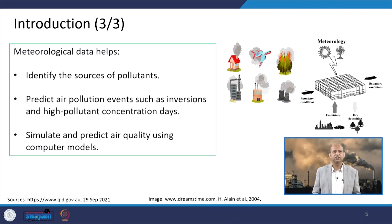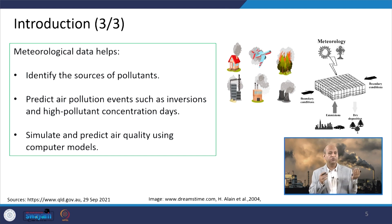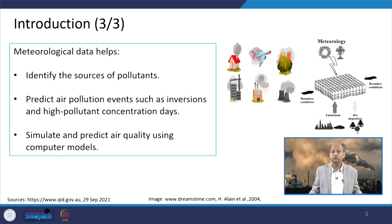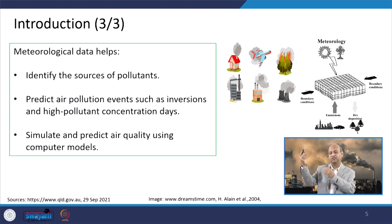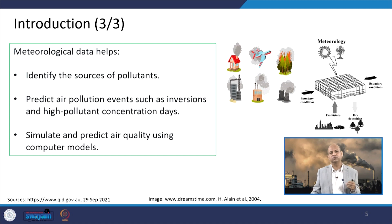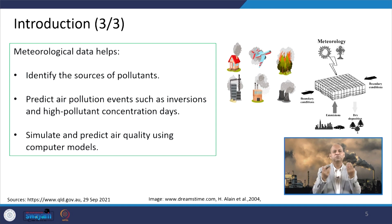Meteorological data helps in identifying the sources of pollutants because inverse modeling can also be done. For example, at a particular monitoring point if you get very high pollutant concentration and there are no obvious local sources, then using meteorological parameters — the wind direction, the upwind direction — you can do inverse modeling and trajectory plotting to trace back to the particular source in the upwind direction from which that pollutant is coming.